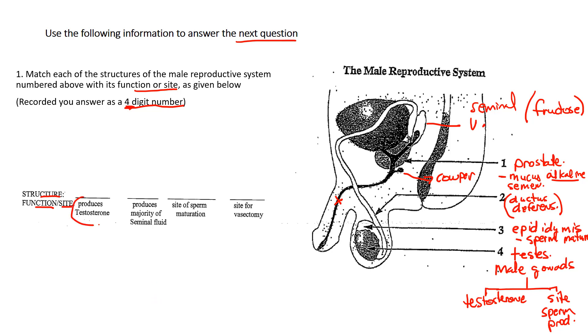It says produces testosterone. If we take a look at our notes, you can see testosterone right here. What produces it is the testes, which on this diagram is labeled as number four.